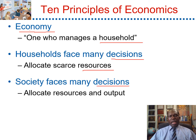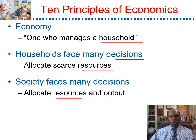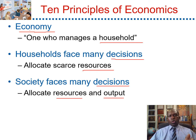Society faces many decisions. They have to allocate resources and output. For instance, society has to decide what type of resources to use to produce it — civilian goods or military goods.